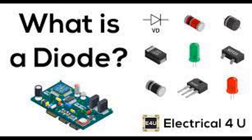Diodes are semiconductor devices with two terminals that allow current to flow in one direction only. They exhibit the property of rectification, meaning they can convert alternating current (AC) into direct current (DC) by allowing current flow in one direction while blocking it in the other. Diodes are crucial components in electronics and find applications in rectifiers, amplifiers, oscillators, signal demodulation, voltage regulation, and more.